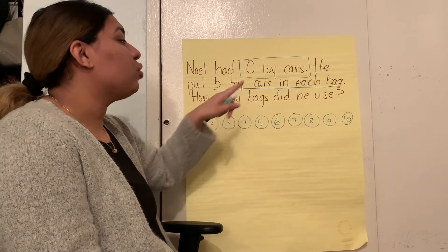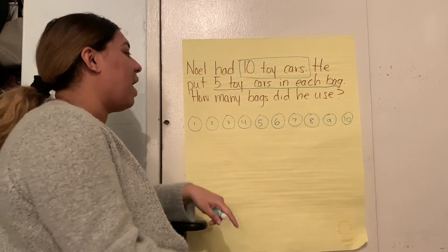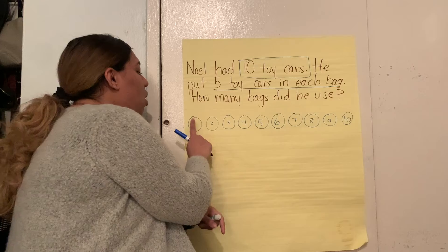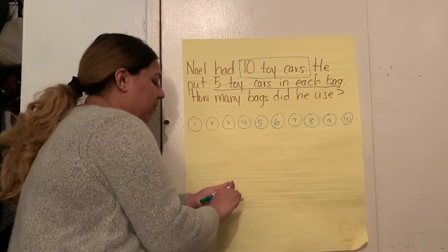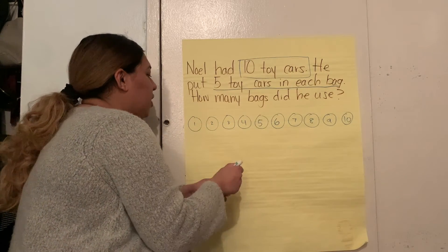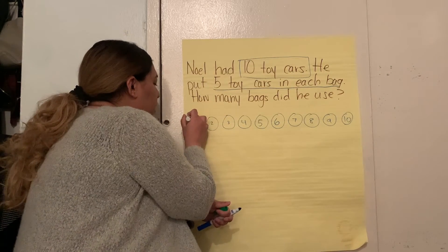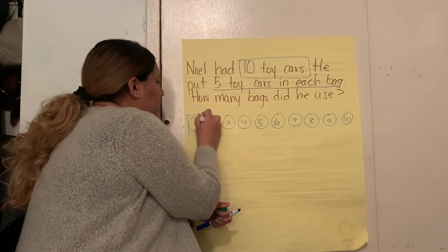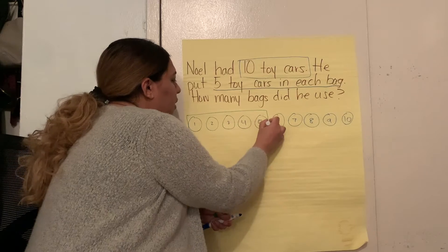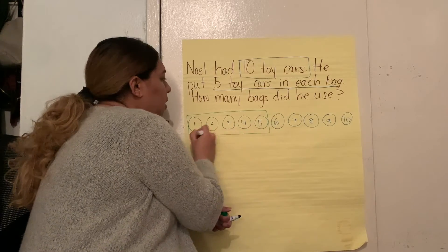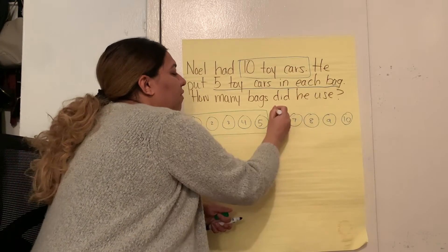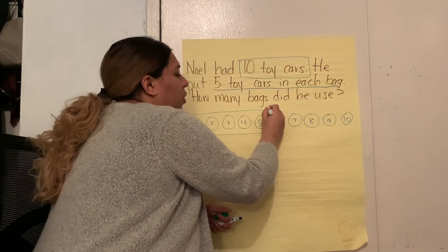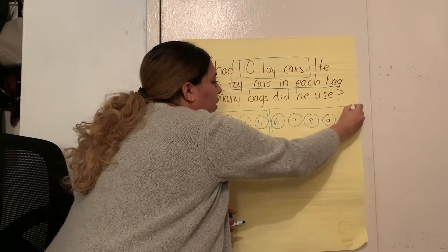He put 5 toy cars in each bag. So let's count: 1, 2, 3, 4, 5 — and we're going to put it in a bag. Then 1, 2, 3, 4, 5 — and we're going to put it in a bag.